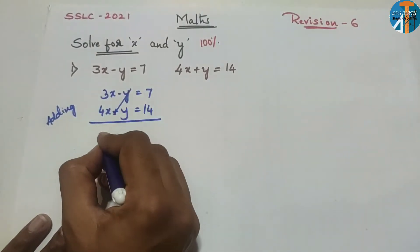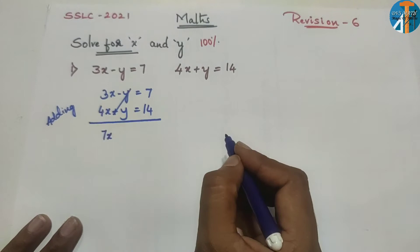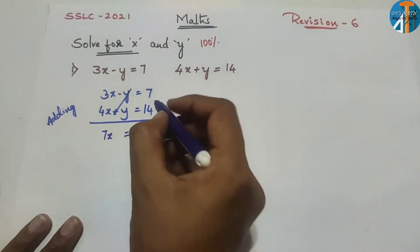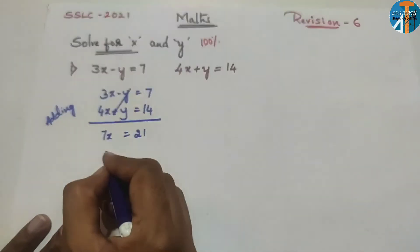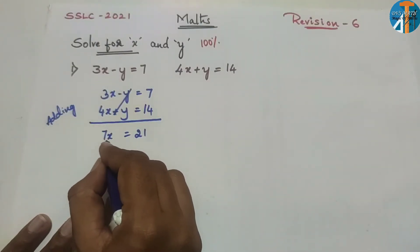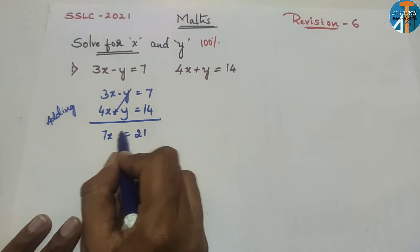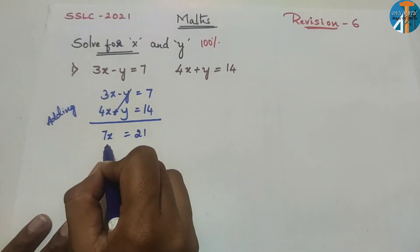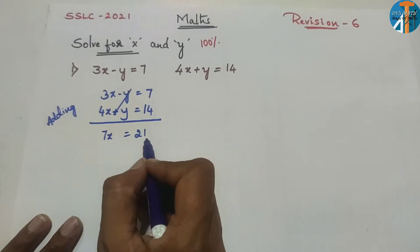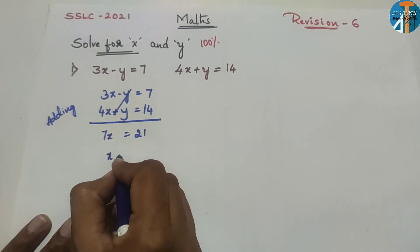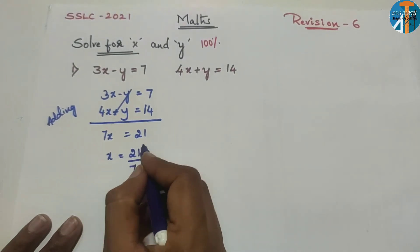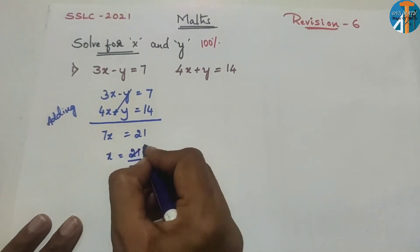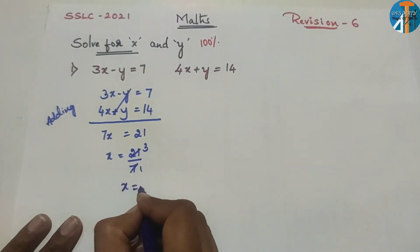So adding: 3x plus 4x equals 7x, and 14 plus 7 gives 21. So 7x equals 21. Therefore x equals 21 by 7, which means x equals 3.